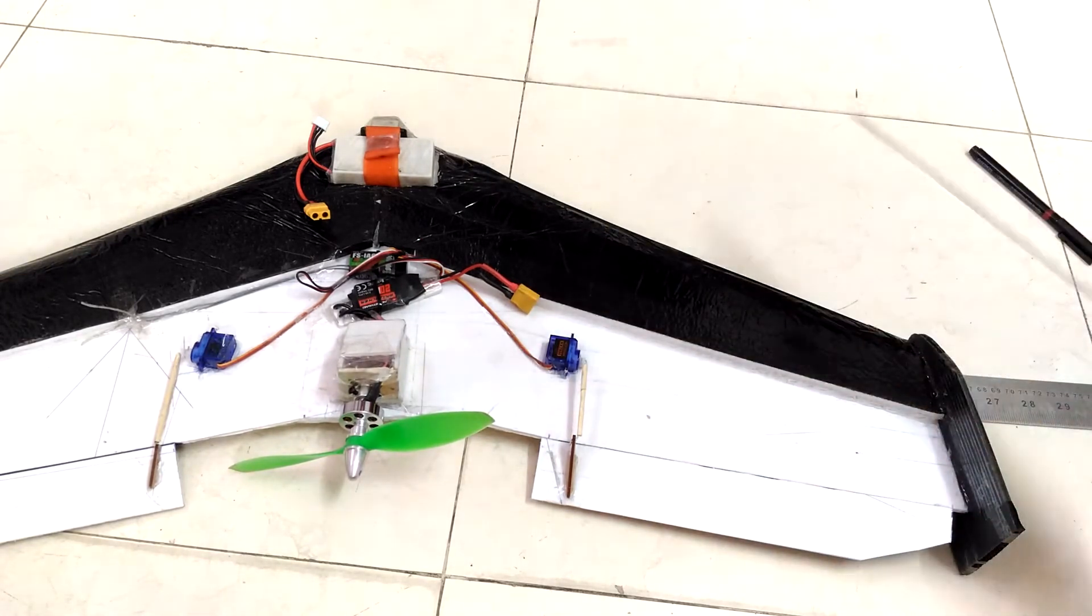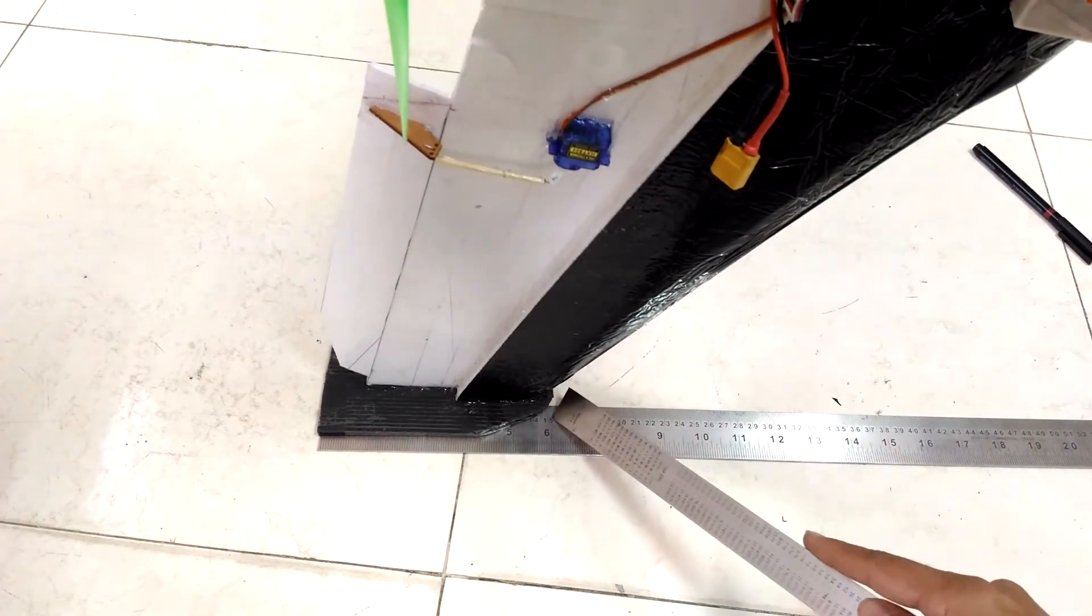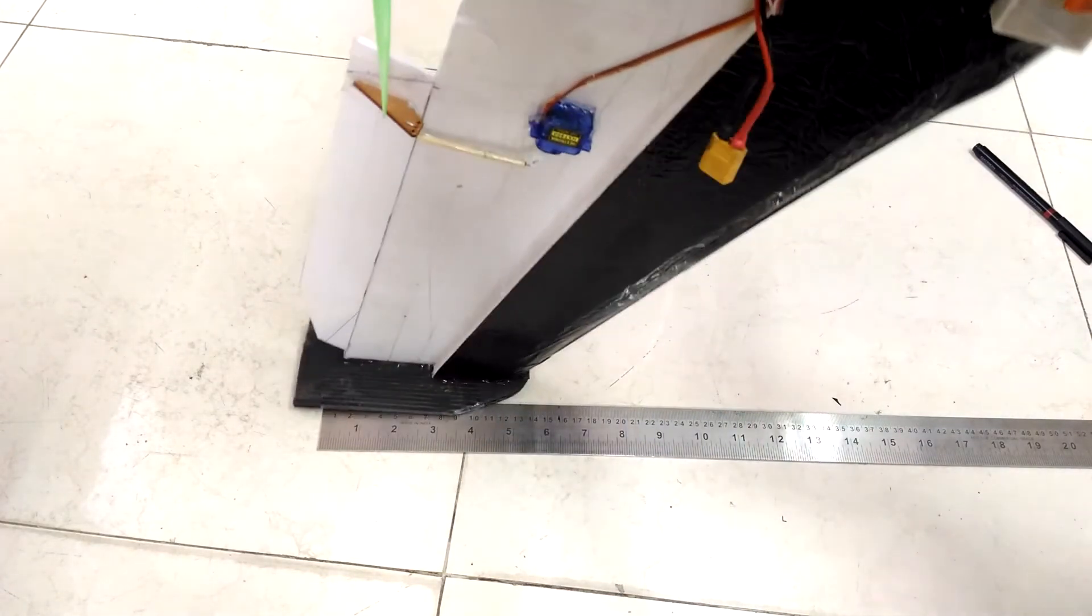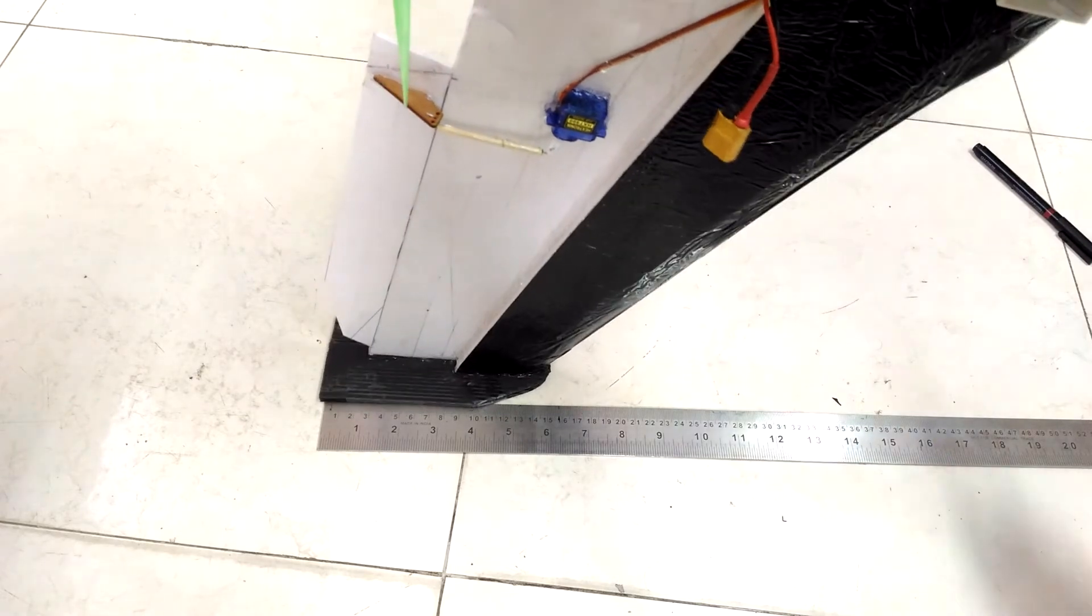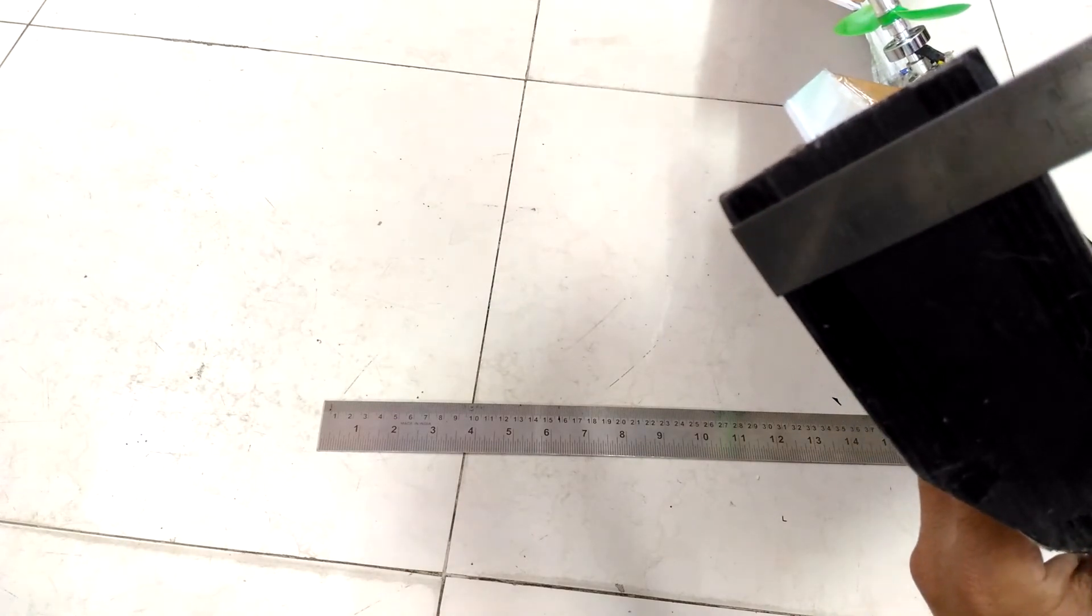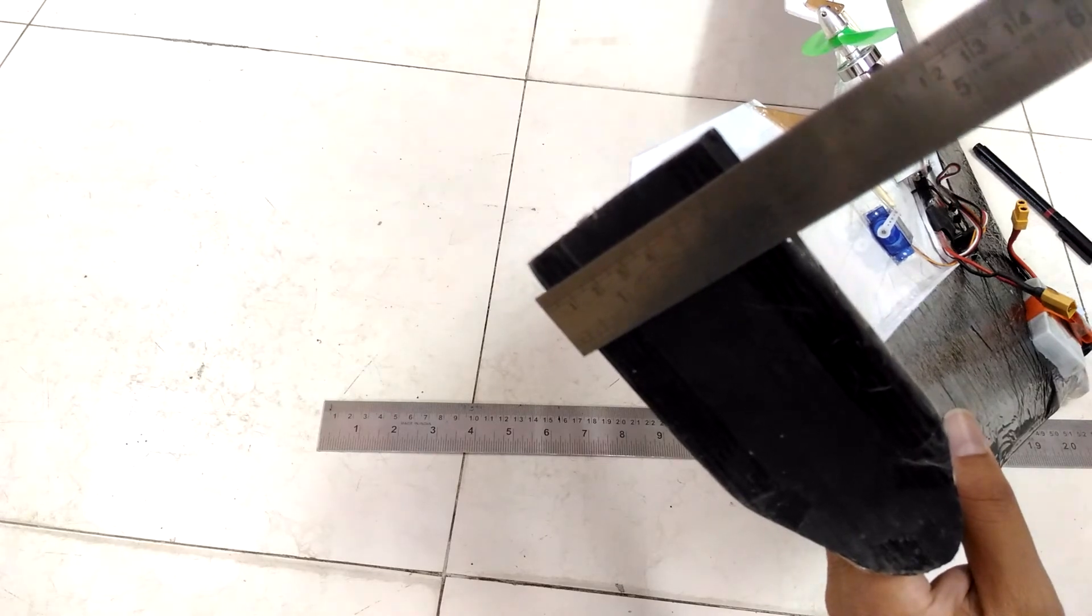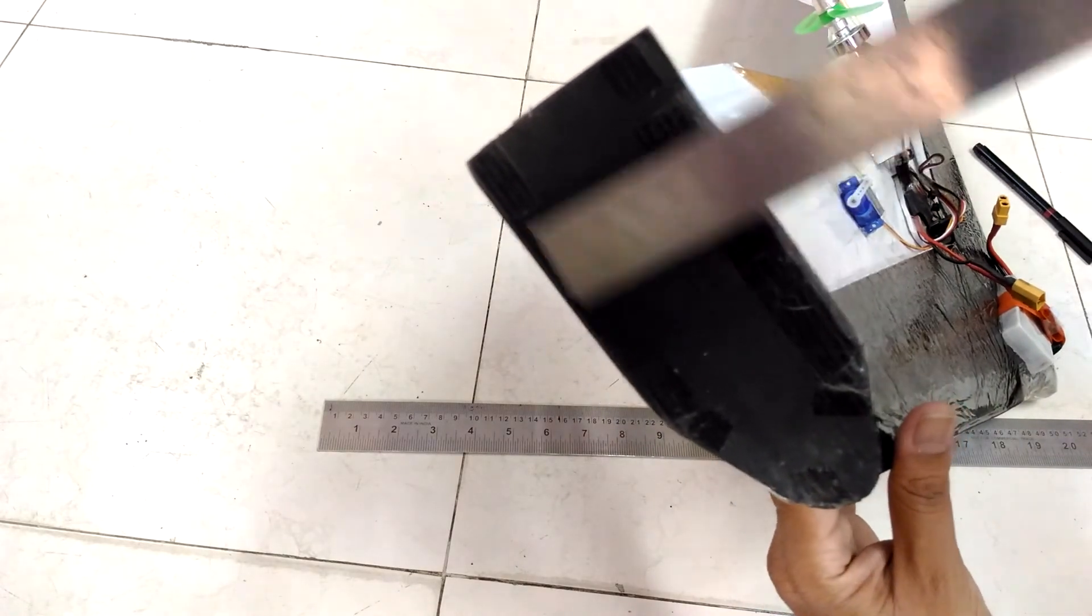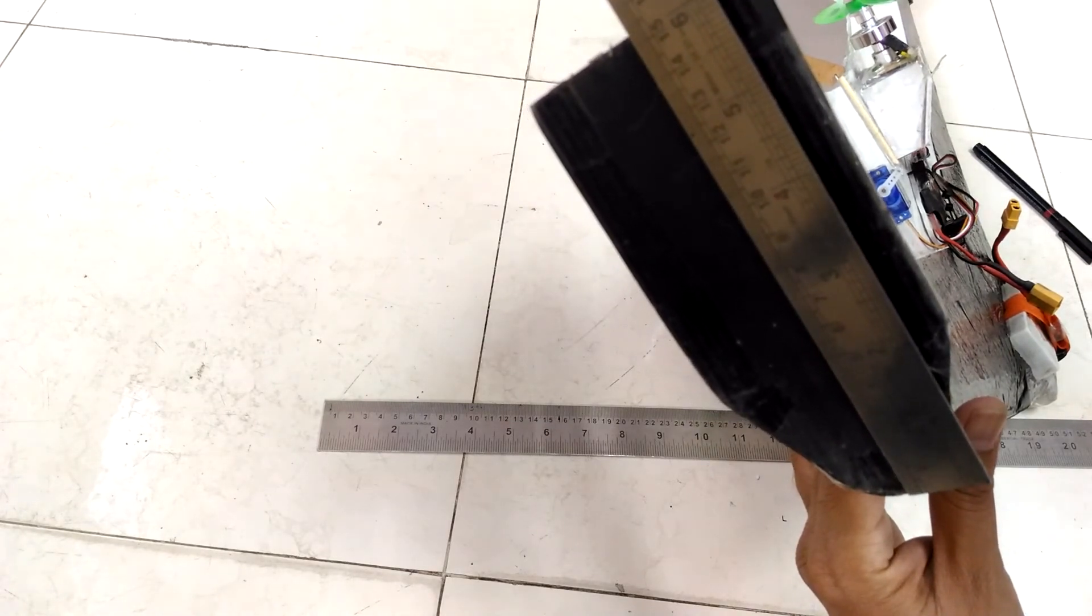So the fins are 15 centimeters, this measurement, and that triangle shape is starting from 10 and a half centimeters. The height of the fins is 7 centimeters. You can make it any shape you want. So the height is 7 centimeters, length is 15 centimeters.